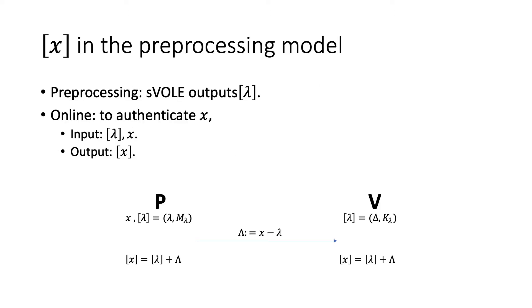All the operations on authenticated values are done in the preprocessing model. It means that in the preprocessing phase, two parties use the sVOLE to jointly output a large number of random authenticated values, like lambda in this case. In the online phase, to authenticate a new value x, the prover and verifier fetch the authenticated lambda. And the prover sends the verifier the difference of x and lambda. Two parties can locally apply an addition between authenticated value and constant number to get the authenticated x.